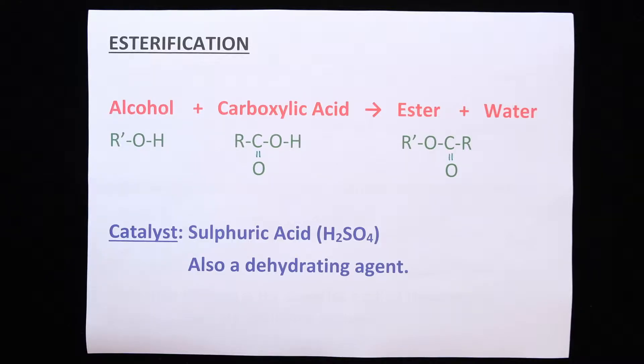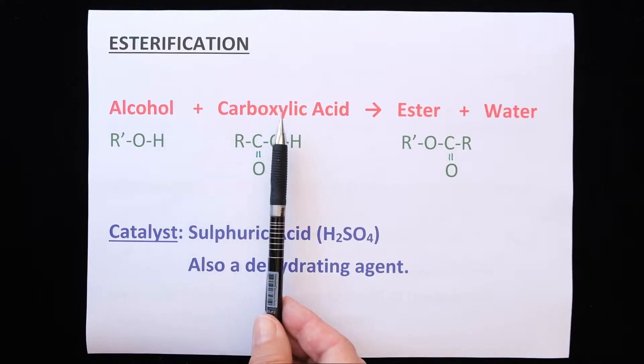Esters are the substances that smell nice, the organic substances that smell like strawberry, banana, vanilla essence, almond essence. They are made up of alcohols and carboxylic acids.